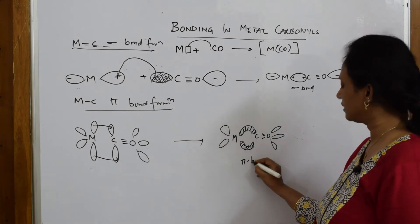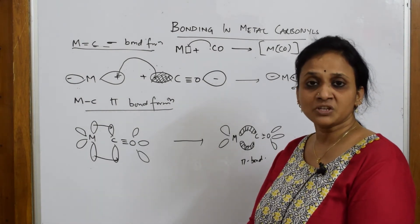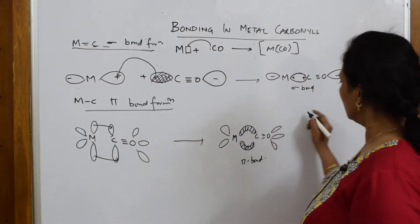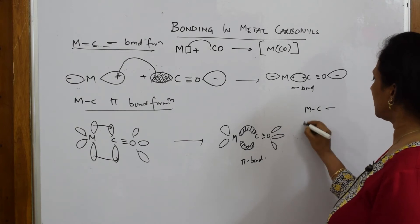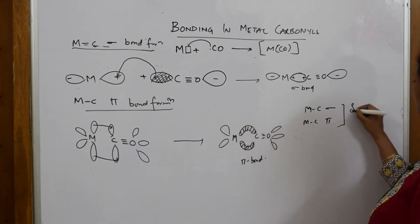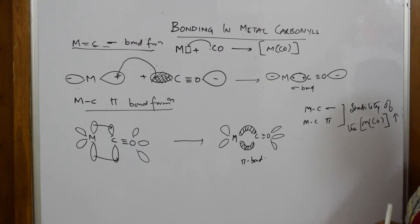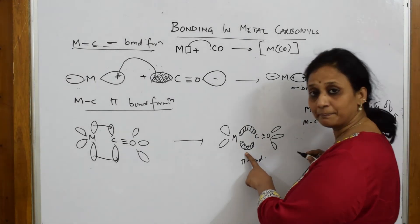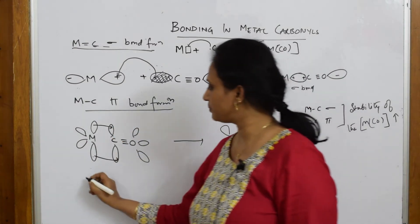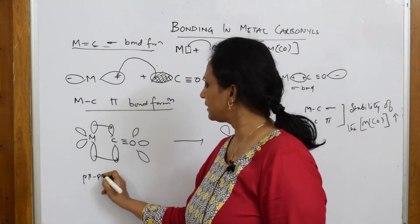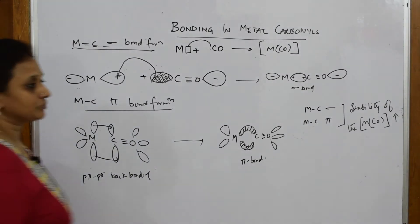What is the use of this? Whenever we study electron displacement concepts — we studied hyper conjugation in grade 11 — because of this, the molecule attains a form of stability. This particular thing — metal sigma and metal-carbon pi bonding — because of these two, stability of the metal carbonyl complex increases. This concept is called pi back bonding, or Pπ–Pπ back bonding.